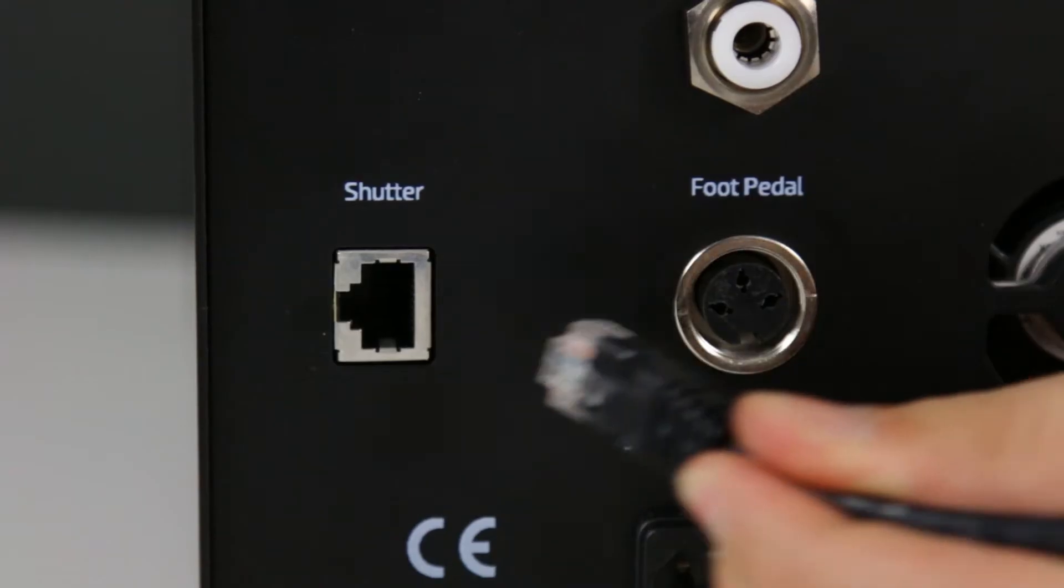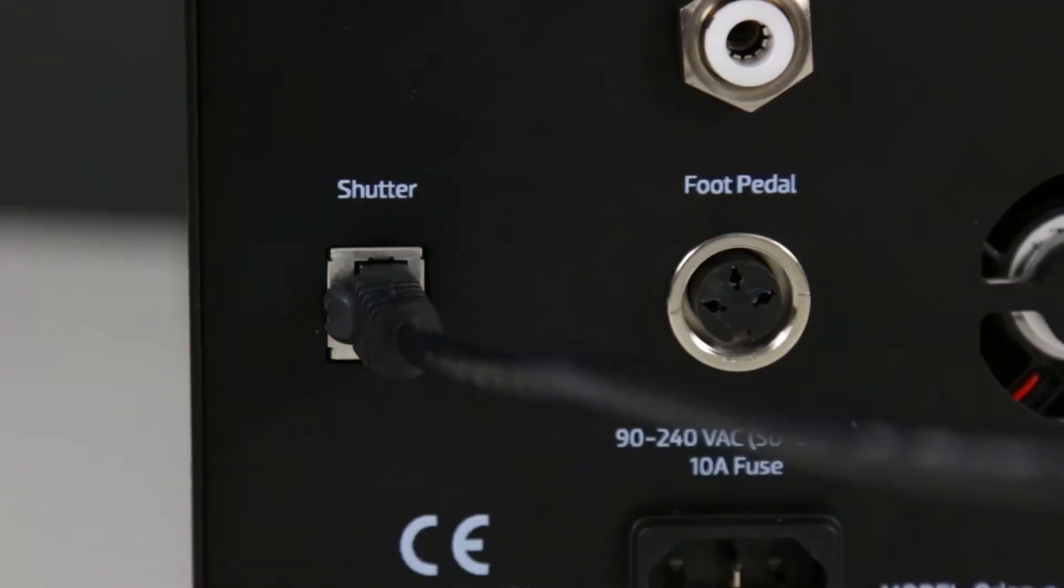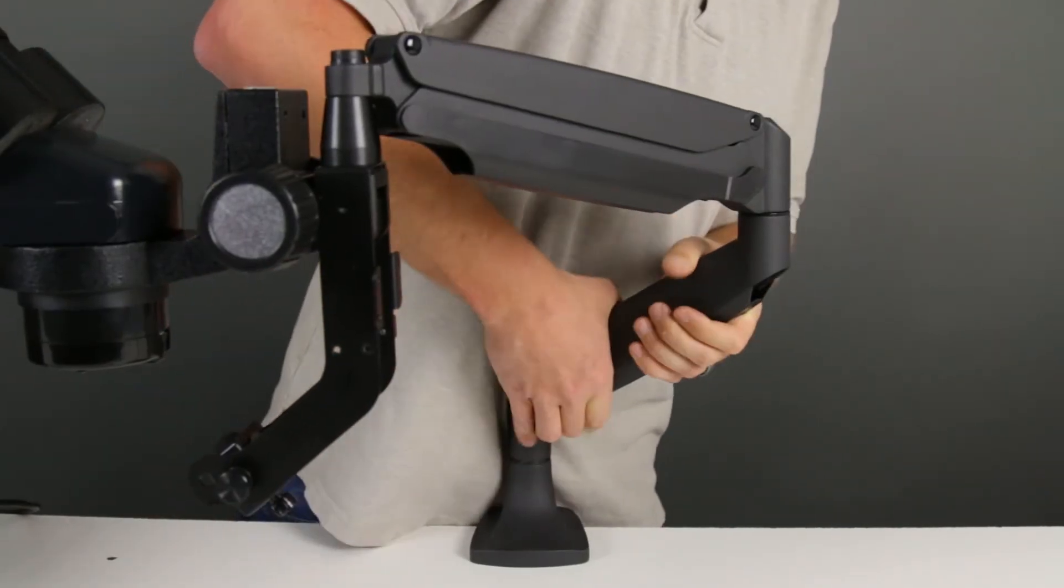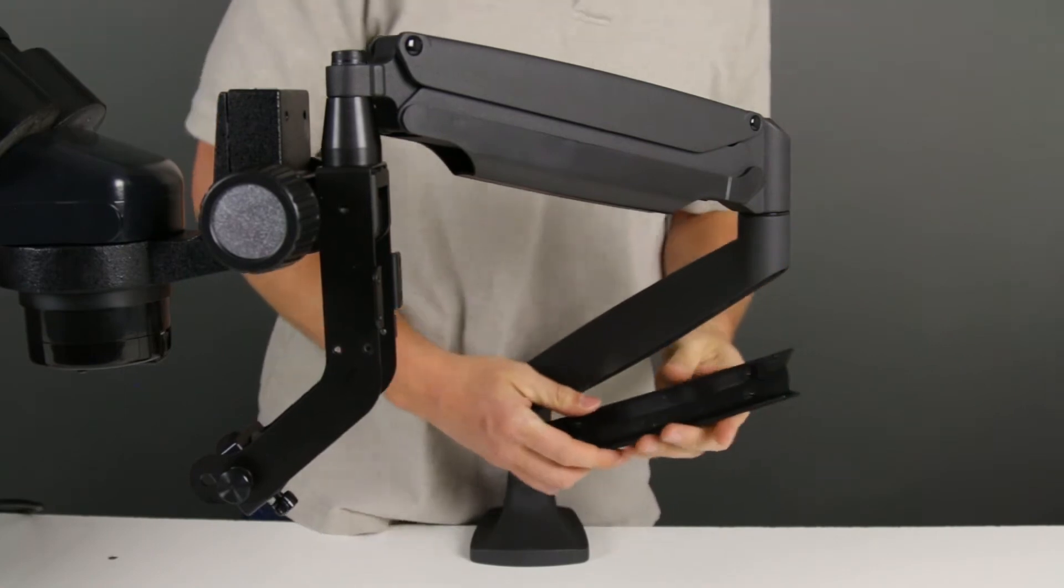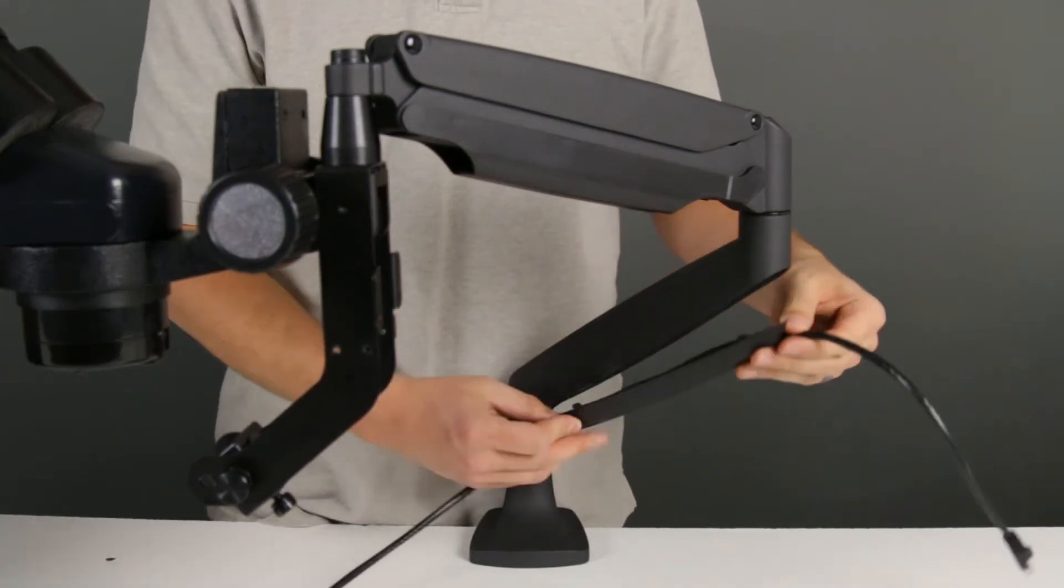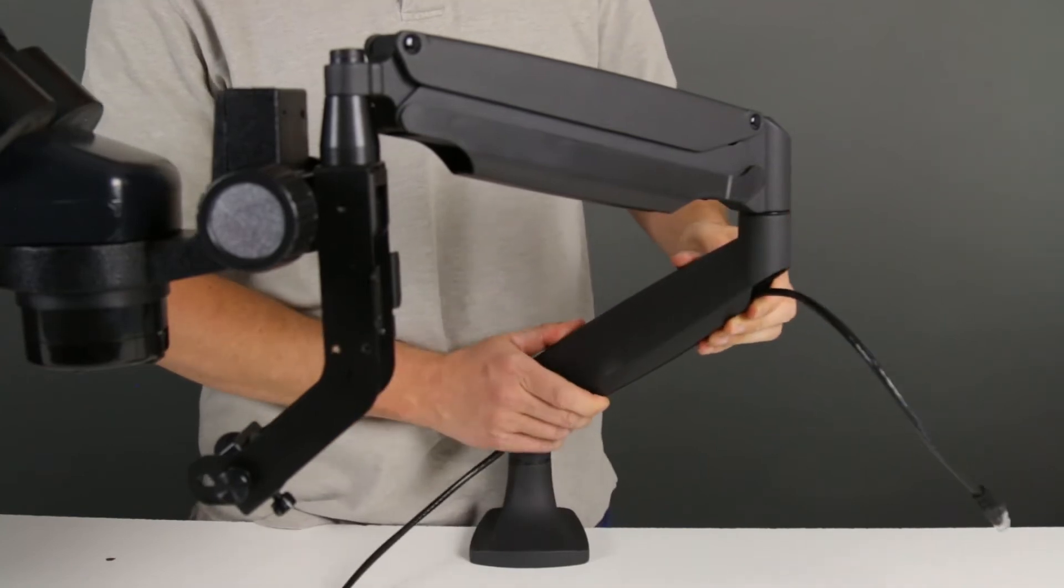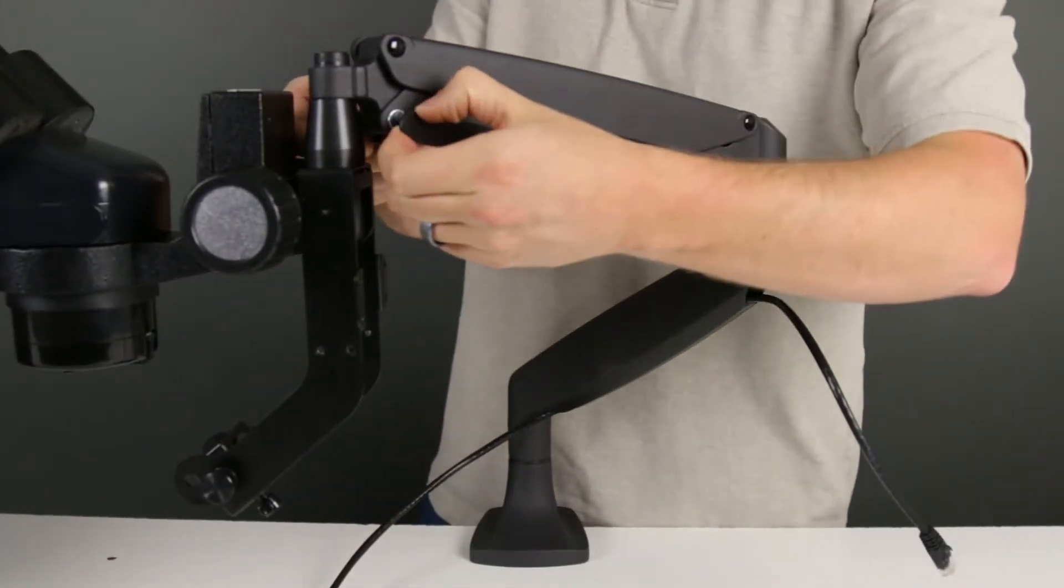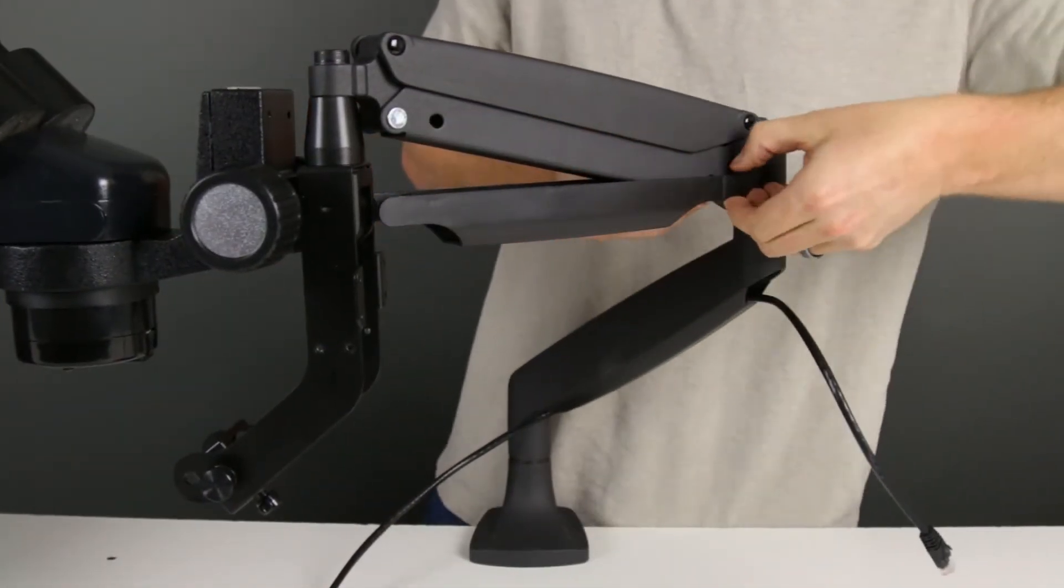Connect one end of the RJ45 or Ethernet cable into the shutter port on the back of the welder. Remove the bottom of the arm and run the RJ45 cable through the bottom portion of the arm to keep the wires out of your way during welding. Next, remove the upper bottom half and run the rest of the cable through the arm.